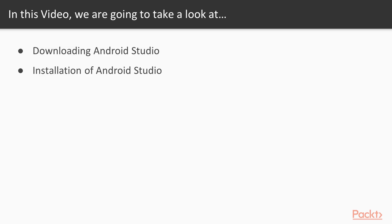In this video we are going to take a look at a couple of points. First, how to download Android Studio, and then how we can install it inside the main operating system. We need to install Android Studio inside Windows 10. You can install it in VMware Workstation, or if you have Windows 10 as your main operating system, you can install it there as well. Open the browser of the Windows 10 operating system and let's download it.